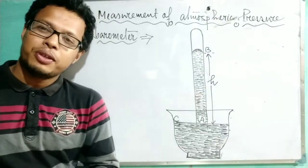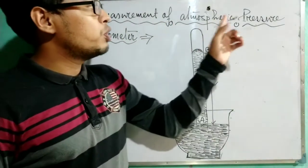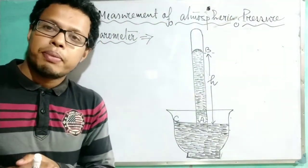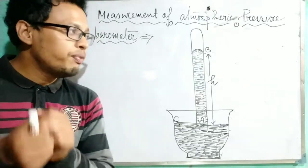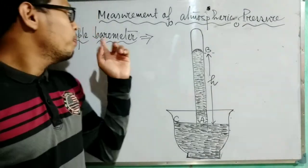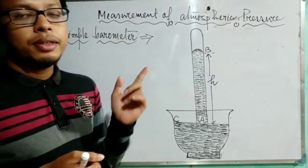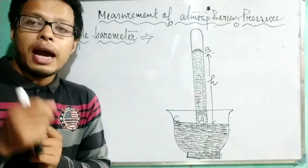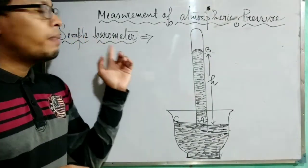Welcome back. Today's topic is about the measurement of atmospheric pressure. There are some devices by which we can measure the value of atmospheric pressure. The device which can measure atmospheric pressure is called the barometer. There are three types of barometer: the first one is the simple barometer, the second is the Fortin barometer, and the third one is the aneroid barometer.